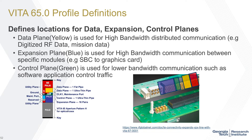Blue blocks are the expansion plane, for high-bandwidth communication in more of a host-to-peer topology — like a single board computer to a graphics card direct communication — while the data plane is more distributed communication through a network switch. Green is the control plane, for lower-bandwidth communication like control traffic. The diagram on the right shows how you can look at a VITA 65 slot profile and picture what it looks like in an actual system, showing which wafers carry the data, control, and expansion planes.